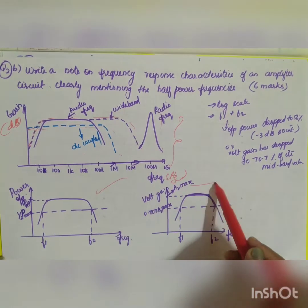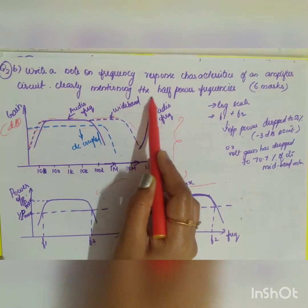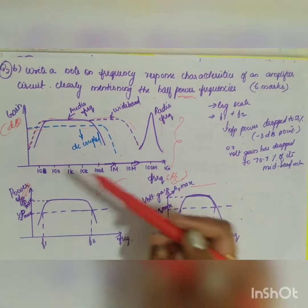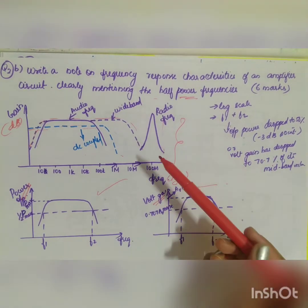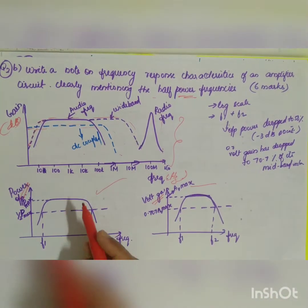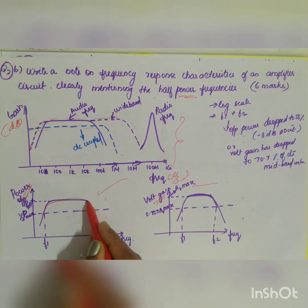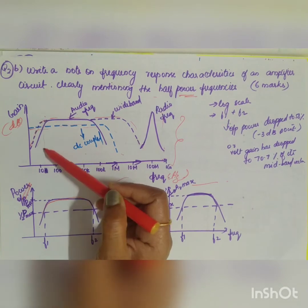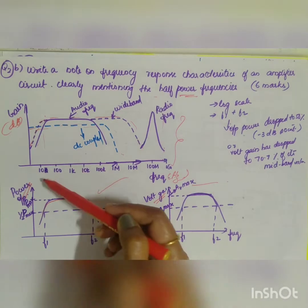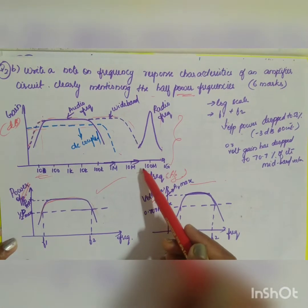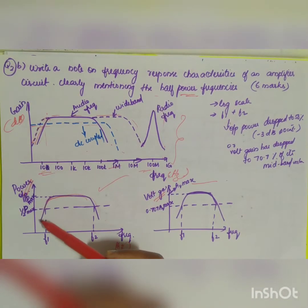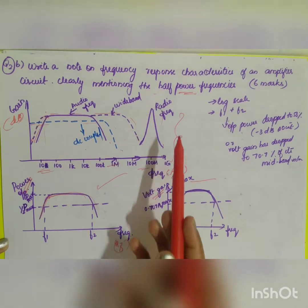You have to give these diagrams, including separate diagrams, because it is asked to clearly mention the half power frequencies. You have two half power frequencies — in terms of power output and in terms of voltage gain output. During the low frequency range and high frequency range, the gain will be reduced.